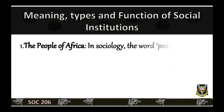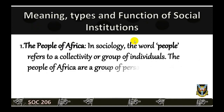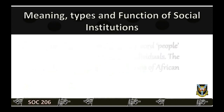In sociology, the word 'people' refers to a collectivity or group of individuals. The people of Africa are a group of persons of African descent. They have diverse ethnic affiliations, differing cultures, and numerous languages.